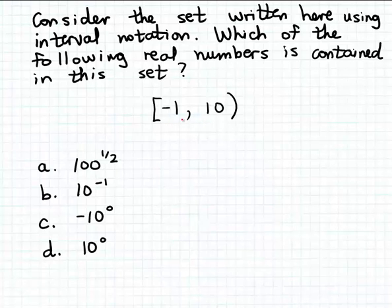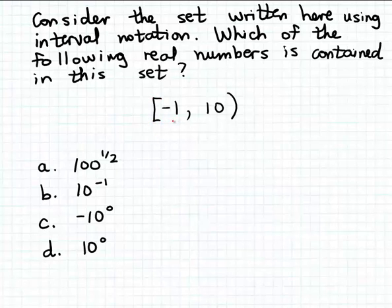The set contains all numbers between the boundary values. If a square bracket is written beside one of the boundary values, that indicates that boundary value is also contained in the set. If a parenthesis is written beside one of the boundary values, that indicates the boundary value is not contained in the set. So this particular interval set — the real numbers between minus one and ten — includes minus one because of the square bracket, but does not include ten because of the parenthesis.